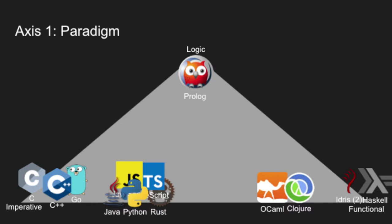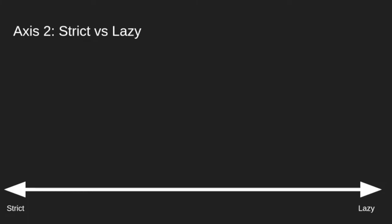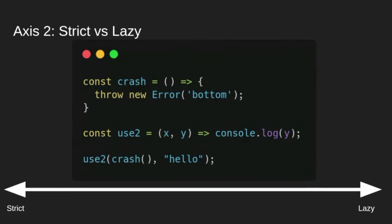If you have any questions or remarks, please just interrupt me — I can't see the chat while I'm presenting. I won't need a whole hour so we can discuss if there's need for discussion. A second axis is really interesting because it's one you usually don't talk about: strict versus lazy. What does this mean?